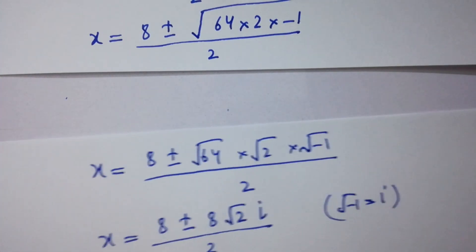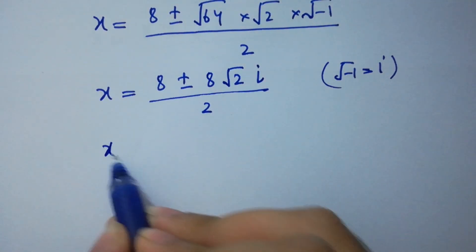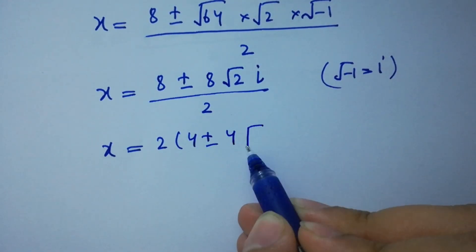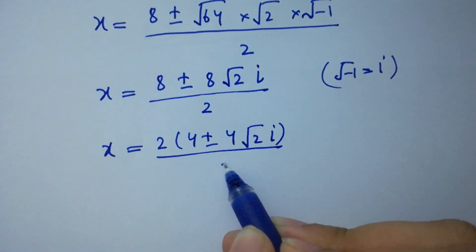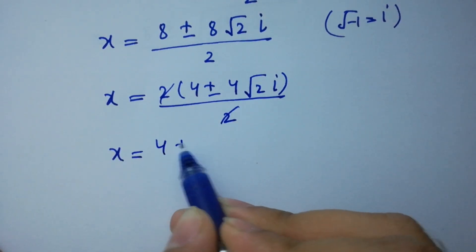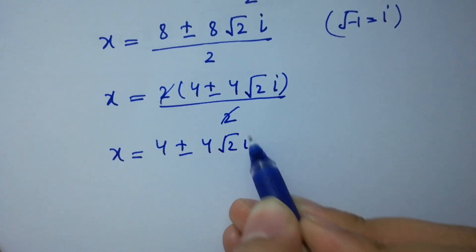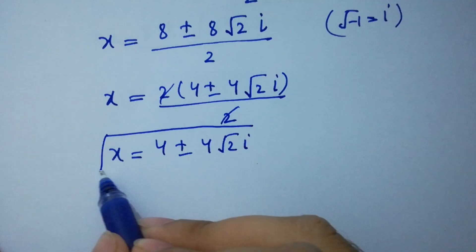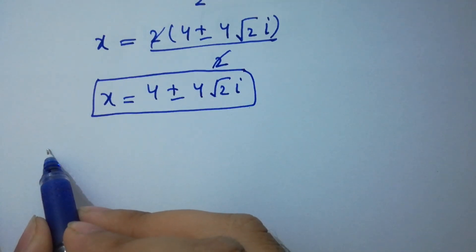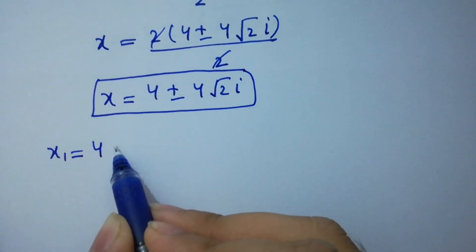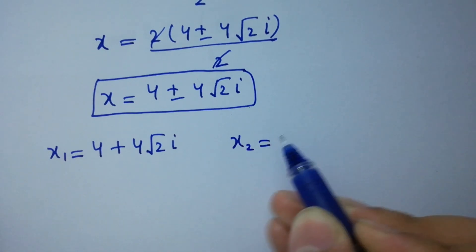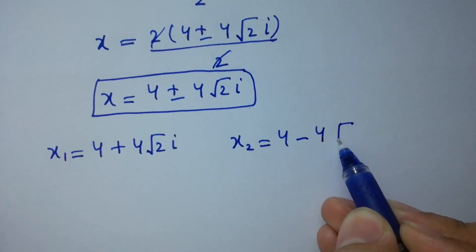Factoring out 2 from the numerator: x equals 2 times (4 plus or minus 4 square root of 2i) over 2. The 2s cancel, giving x equals 4 plus or minus 4 square root of 2i. So x1 equals 4 plus 4 square root of 2i and x2 equals 4 minus 4 square root of 2i.